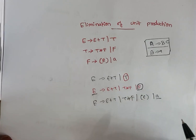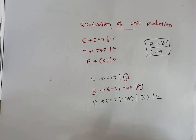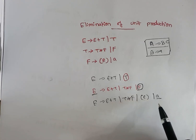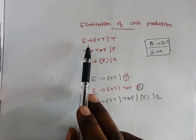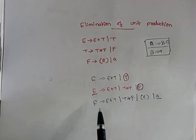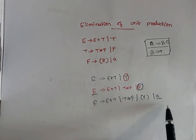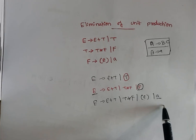This is a single terminal symbol. We call it a unit production only when you have a variable, not a terminal. So this form is allowed. Now we have taken one production and eliminated the unit production out of it.